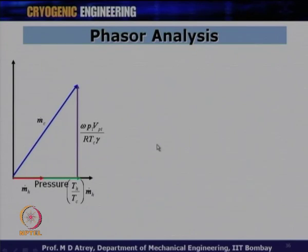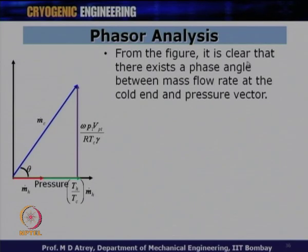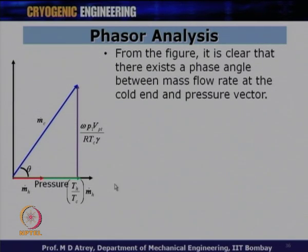So I will stop here now. The summary of this lecture: in a pulse tube cryocooler, the mechanical displacer is removed and an oscillating gas flow in a thin-wall tube produces cooling — this phenomenon is called pulse tube action. The pulse tube systems can be classified based on Stirling type or GM type (presence or absence of valve), geometry (inline, U-type, coaxial, annular), and operating frequency (low, high, very high frequency for Stirling type).